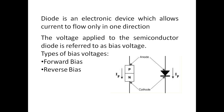The diode is an electronic device which conducts current only in one direction — either from anode to cathode or cathode to anode. The voltage applied to the semiconductor diode is known as bias voltage. There are two types of bias voltage: forward bias and reverse bias.